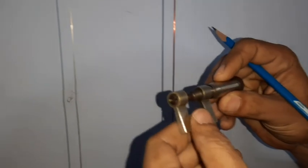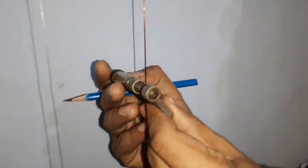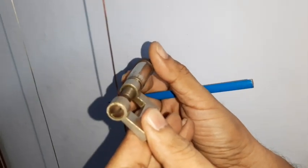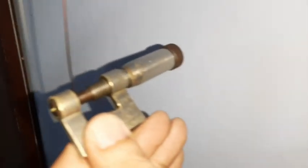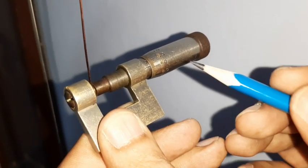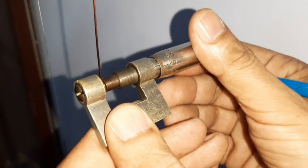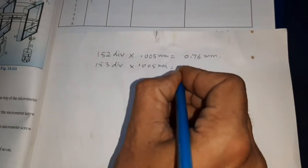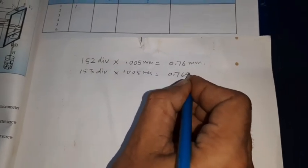Now we have to check the diameter again at a perpendicular position. So it is again 51, 2 and 3, so it is 53. Total divisions are 153, so we have to multiply it with least count again. 153 divisions multiplied by least count turns out to be 0.765 millimeters.